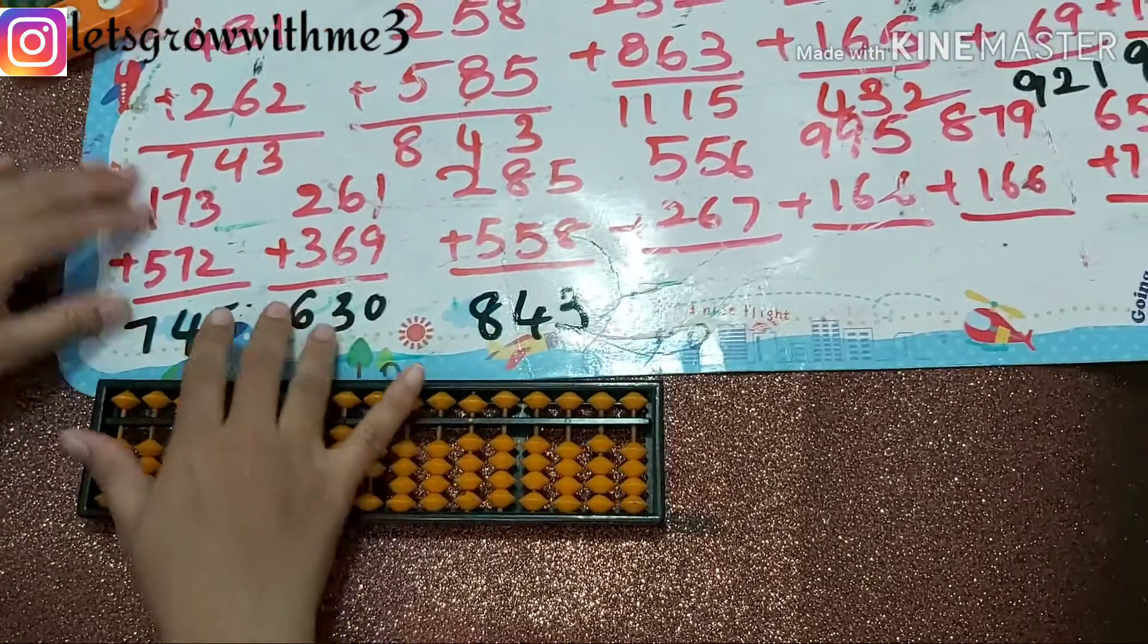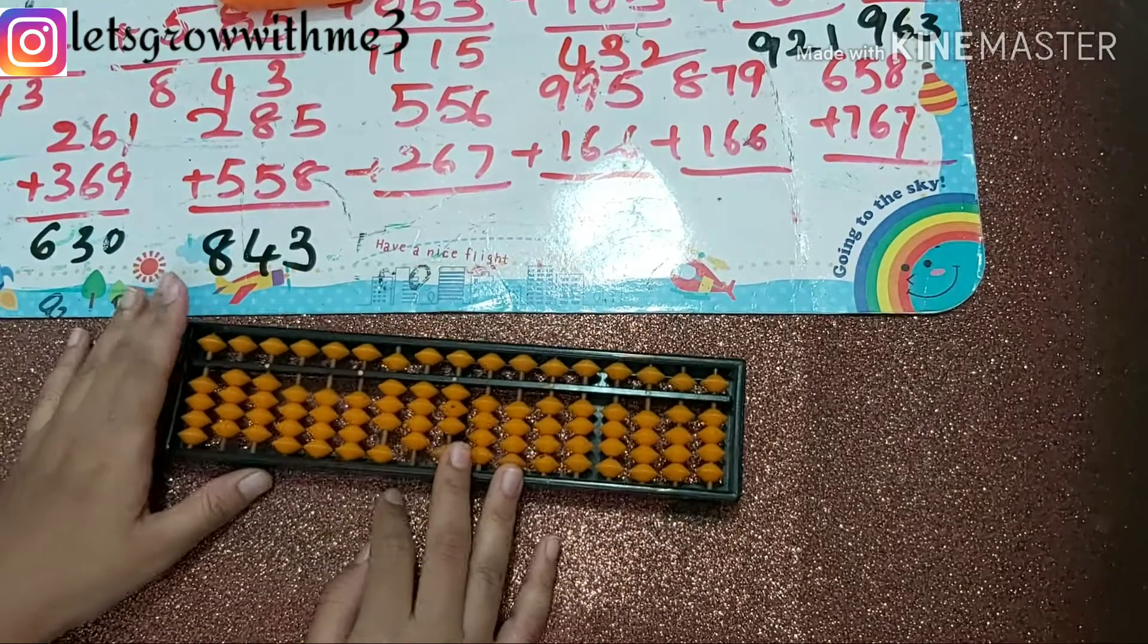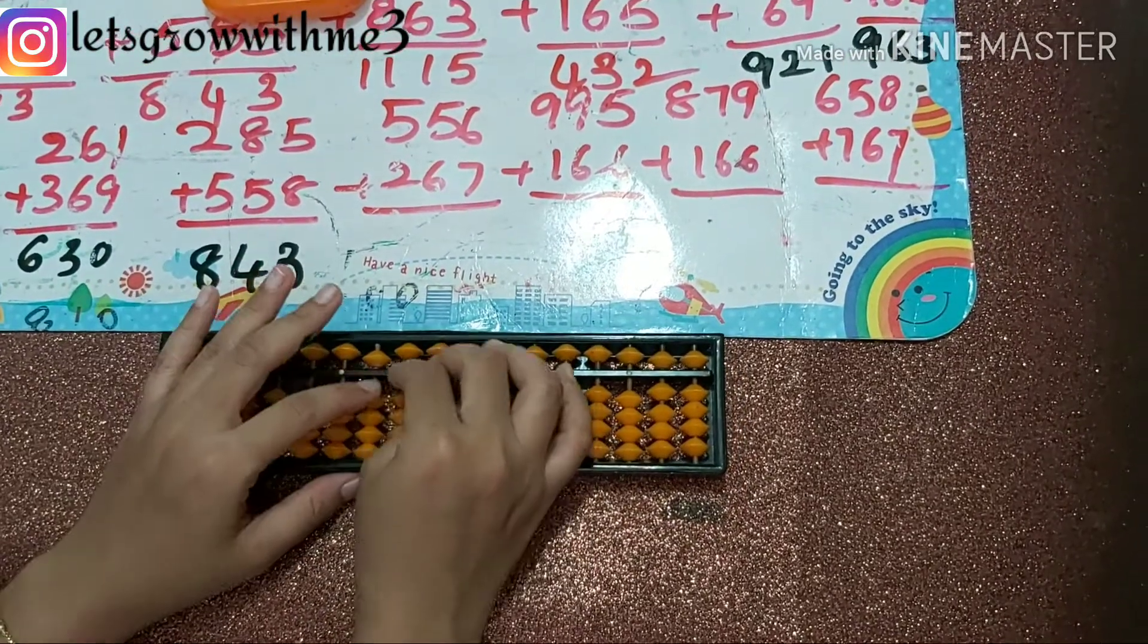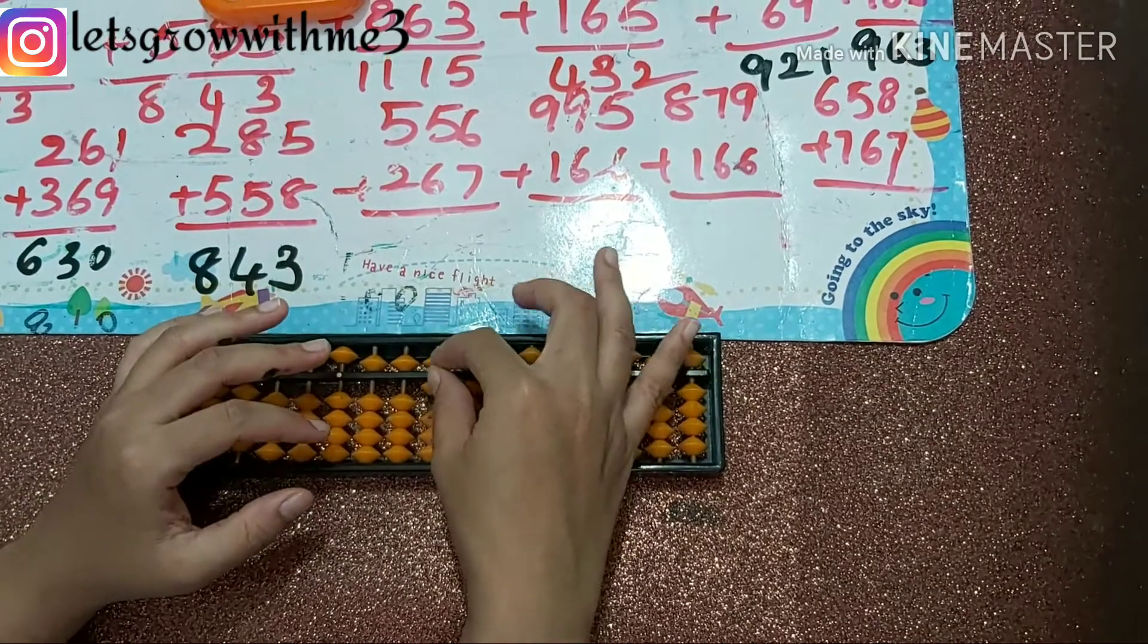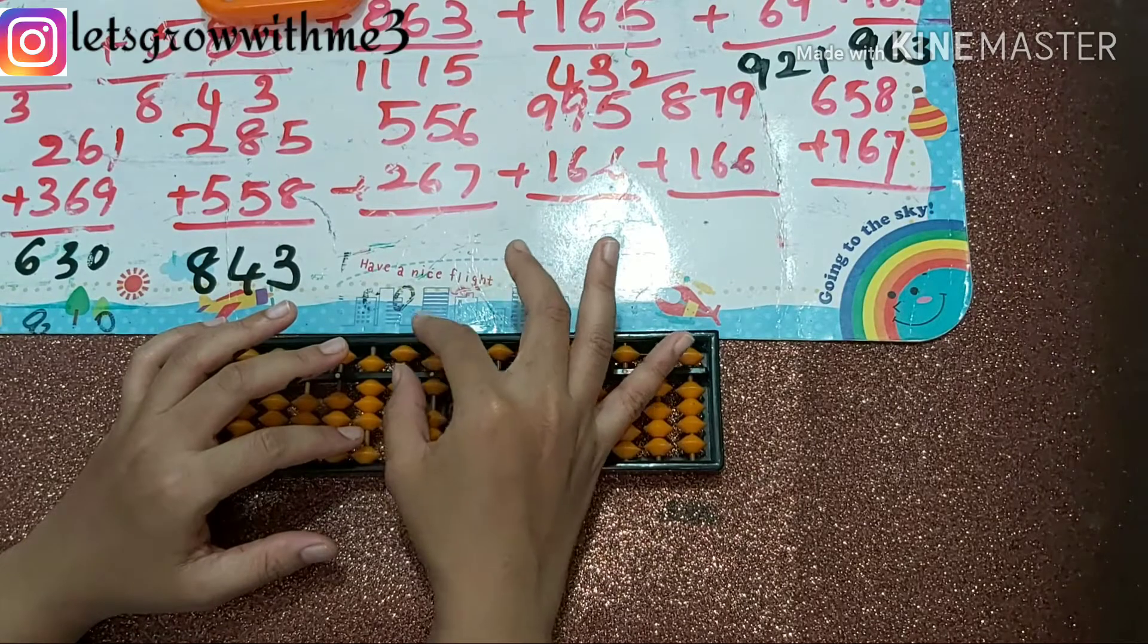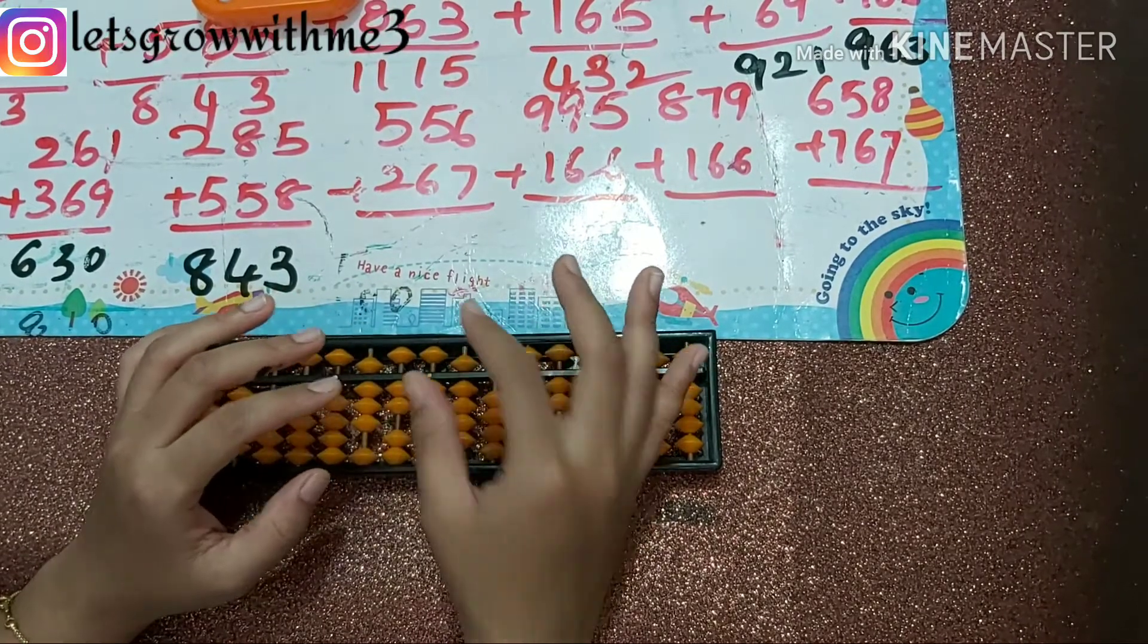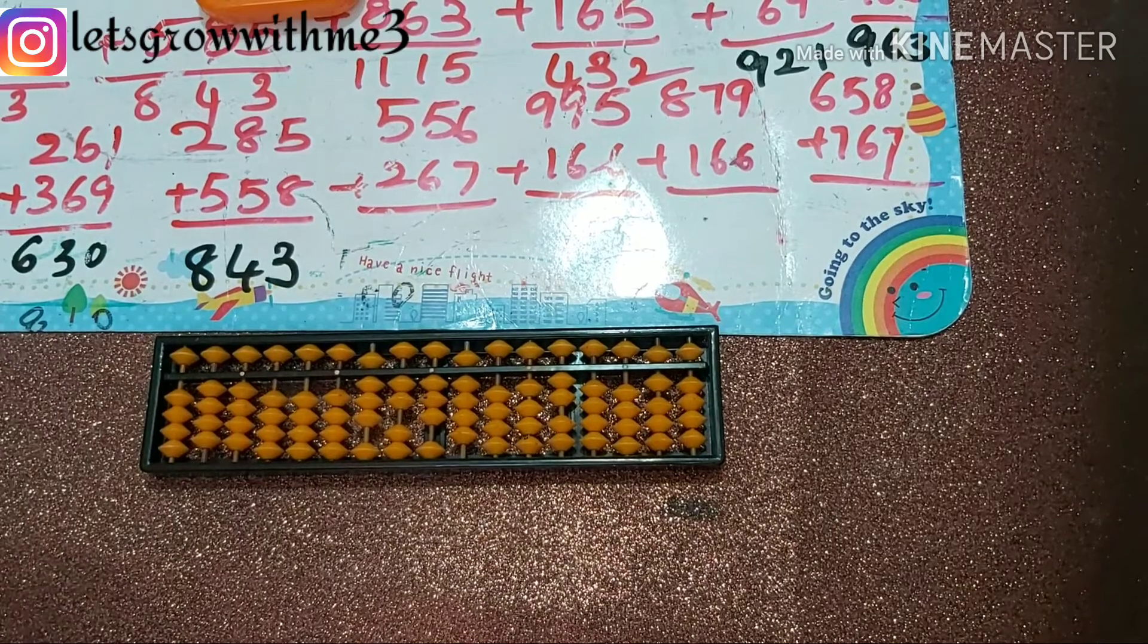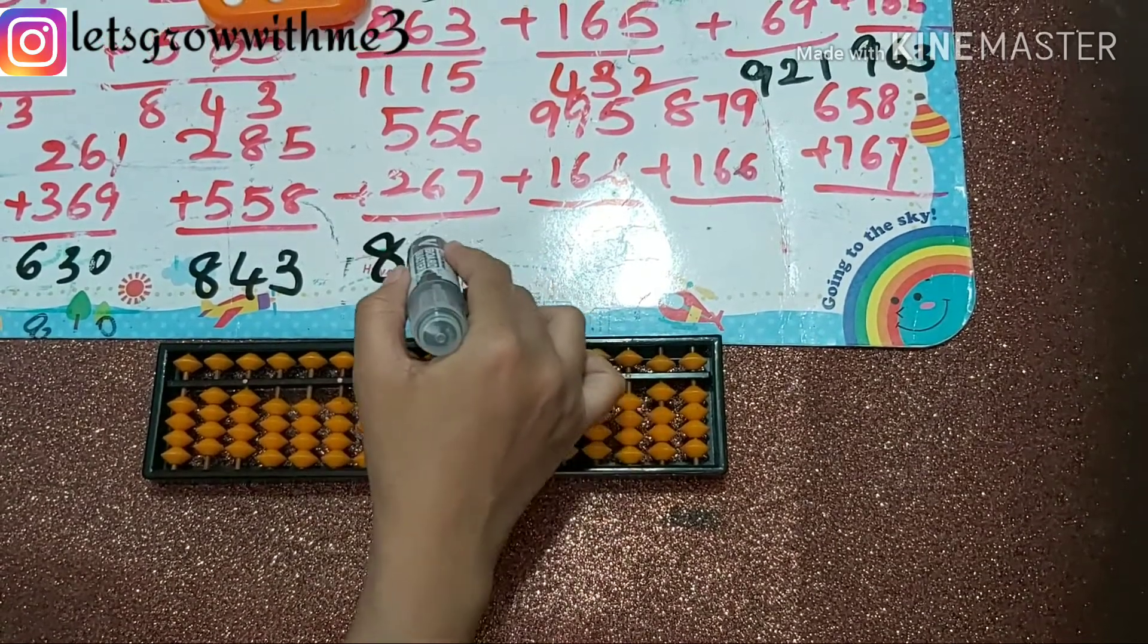Next one: 556 plus 267. Papa, mama, babies up. Plus 7, so papa, mama, babies up. So answer is 823.